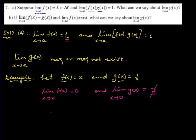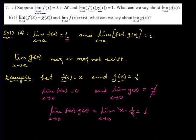If we look at the limit of F(x) times G(x), we can check that the limit of F(x) times G(x) as X approaches 0 is 1, because F(x) means X and G(x) means 1/x, so X times 1/x as X approaches 0 equals 1 — the X cancels out. So there are conditions in which the limit of G may or may not exist.